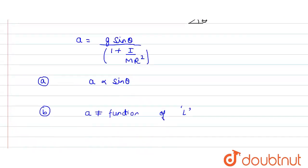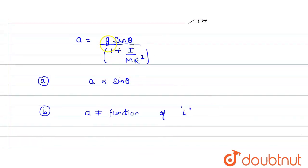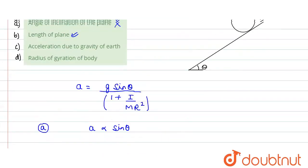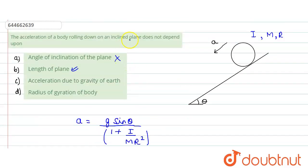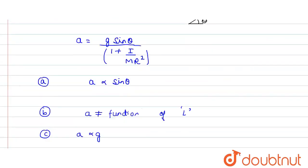For option C — does it not depend upon acceleration due to gravity? We can see that acceleration is directly proportional to g, so it is dependent upon the value of g. Therefore, this cannot be our option.